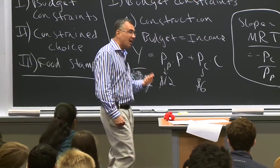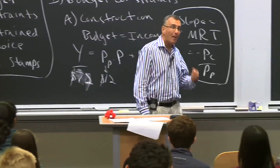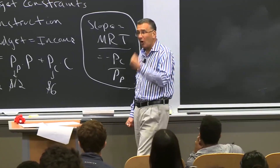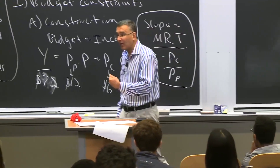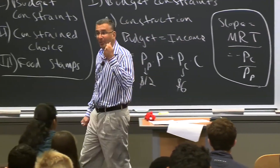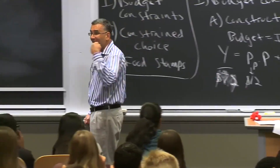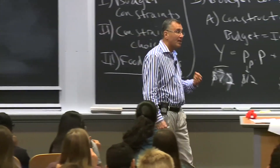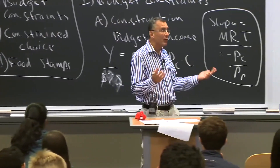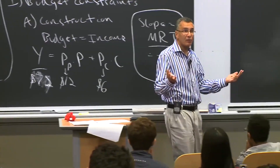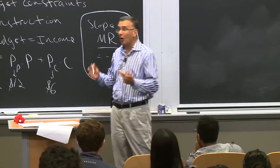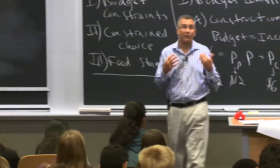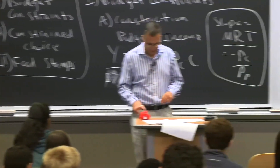This comes back to the key concept from the very first lecture: opportunity cost. The opportunity cost of a slice of pizza is two cookies. Remember, opportunity cost is the value of the next best alternative. Here you only have two alternatives — pizza and cookies — so the opportunity cost of a slice of pizza is two cookies, and that's the sense in which you're transforming pizza into cookies.